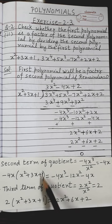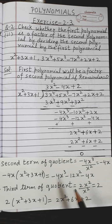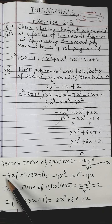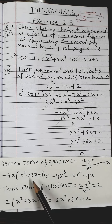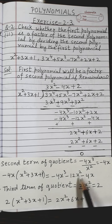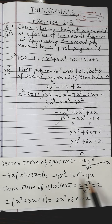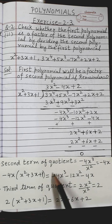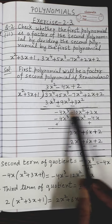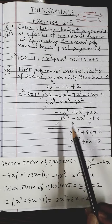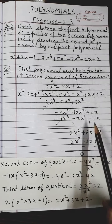Next I multiply -4x with the divisor (x² + 3x + 1). Opening the bracket: -4x × x² = -4x³; -4x × 3x = -12x²; -4x × 1 = -4x. I write the product -4x³ - 12x² - 4x below the new dividend.